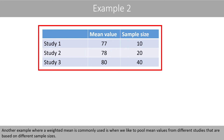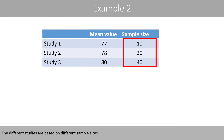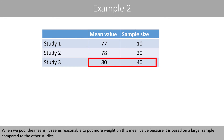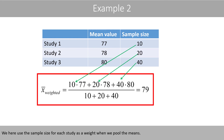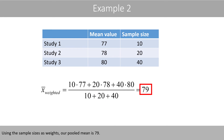Another example where a weighted mean is commonly used is when we like to pool mean values from different studies that are based on different sample sizes. Suppose that we know the mean values from three different studies and like to pool these into one mean value. When we pool the means, it seems reasonable to put more weight on the mean value based on a larger sample. We use the sample size for each study as a weight. Note that the weights do not sum up to 1 in this example, which means that we need to divide by the sum of the weights. Using the sample sizes as weights, the pooled or weighted mean is 79.